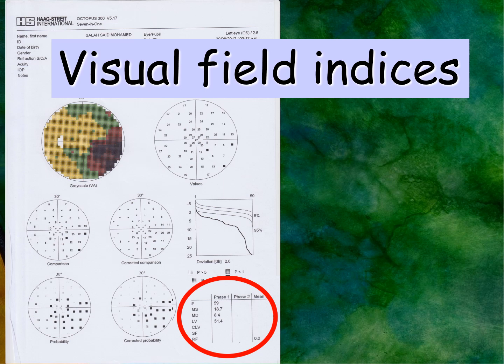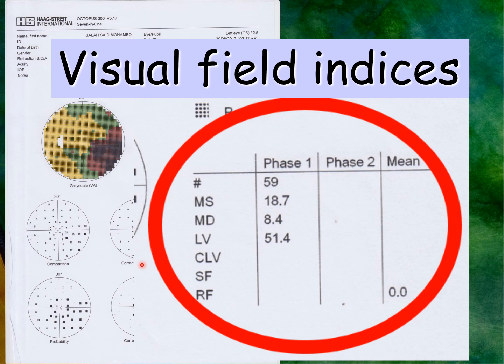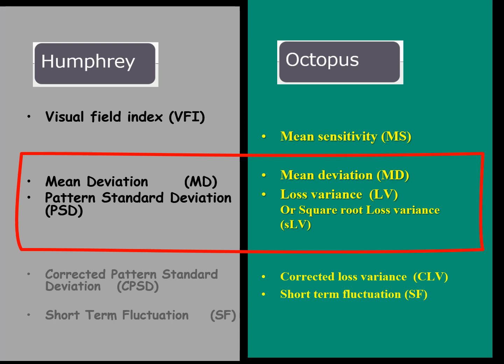In the Octopus, we have mean deviation, loss variance, and mean sensitivity. If the patient is examined twice — a phase one examination with full points tested, then a full test repeated — the short-term fluctuation and the corrected loss variance will be shown. Recently, the square root of loss variance has also been introduced.